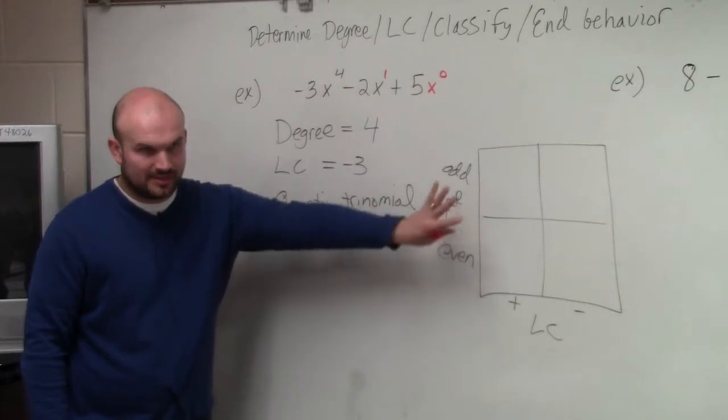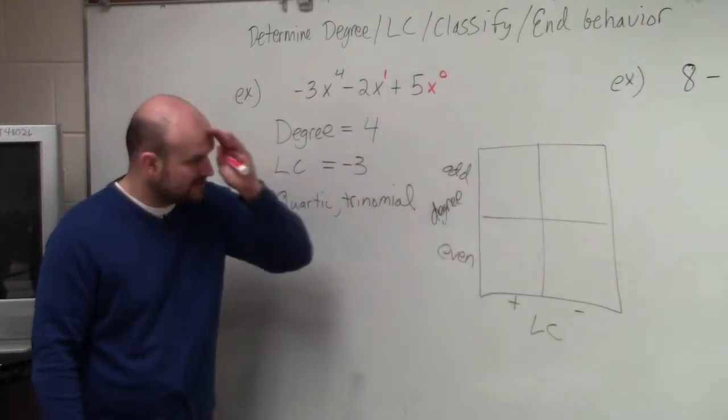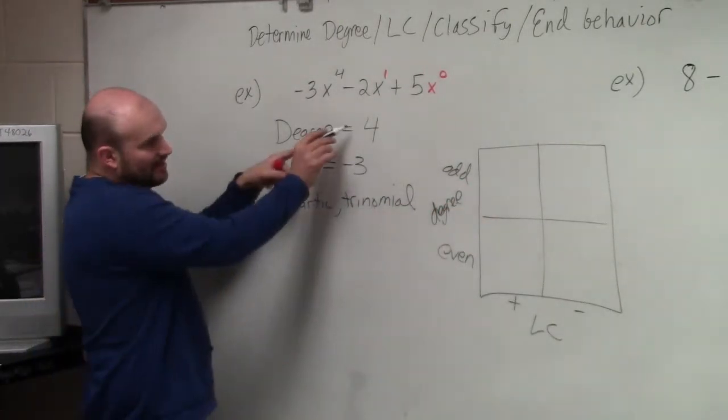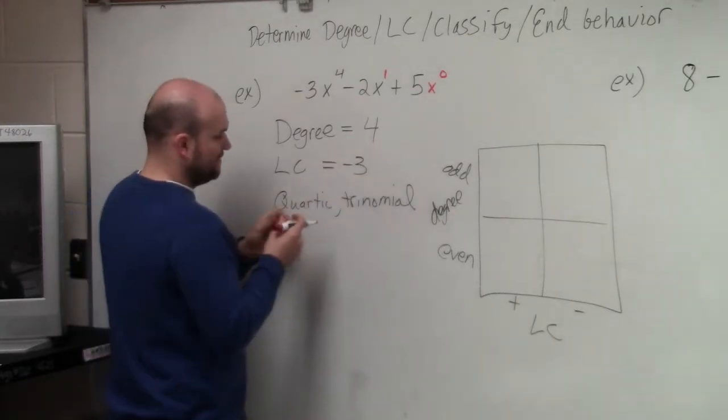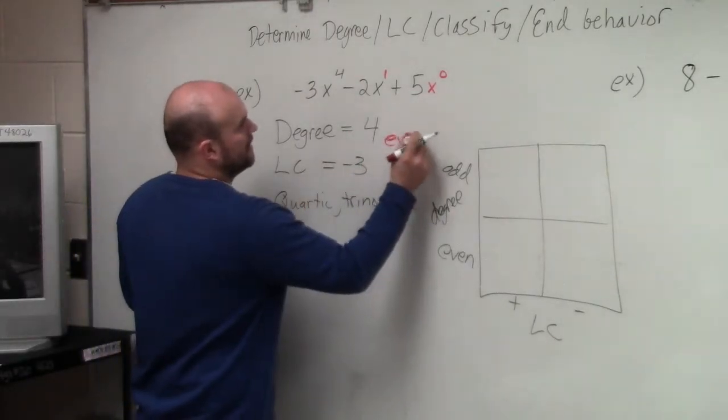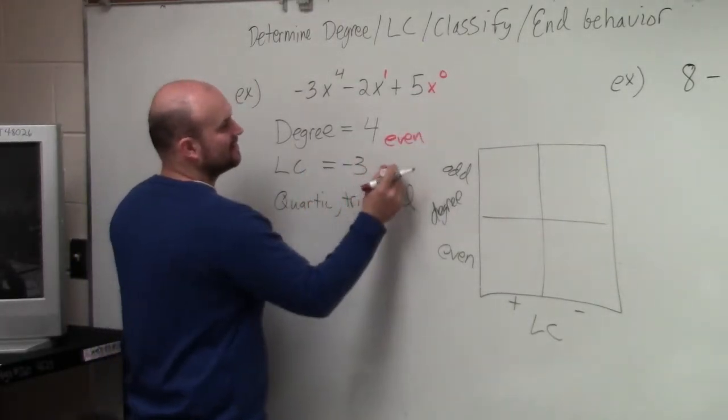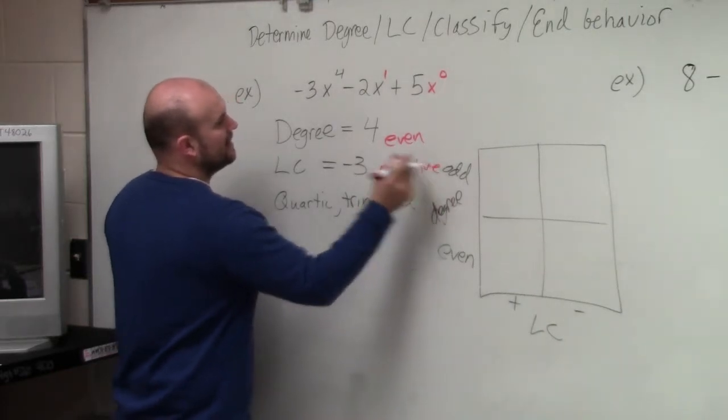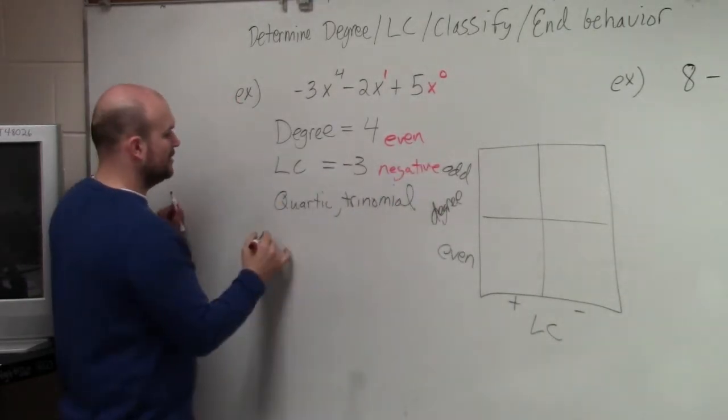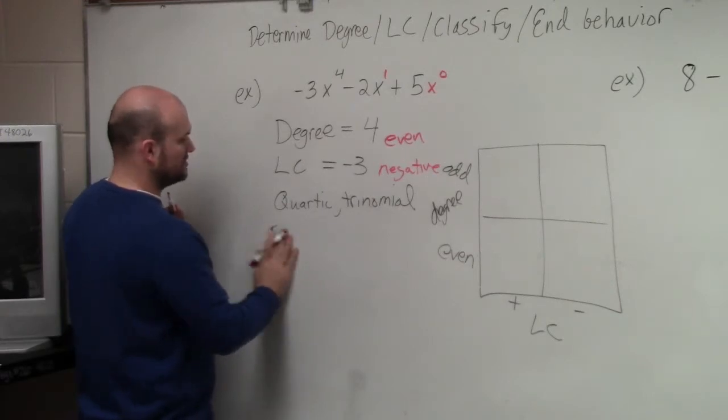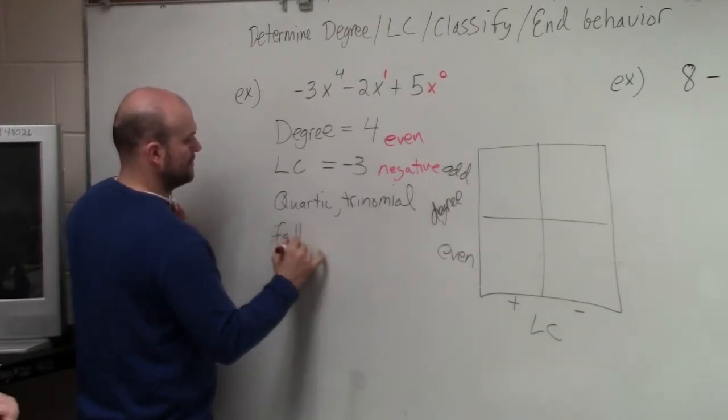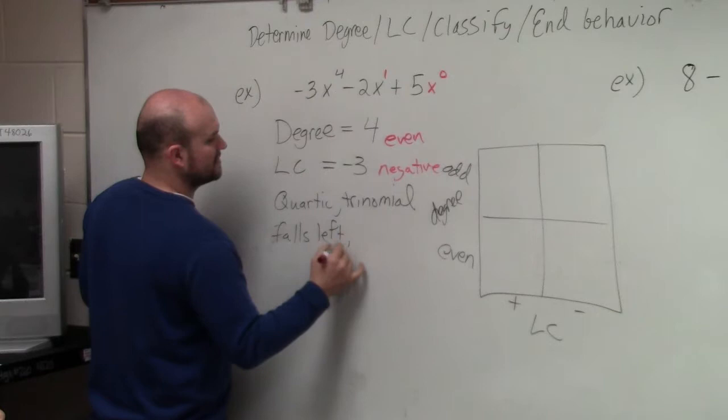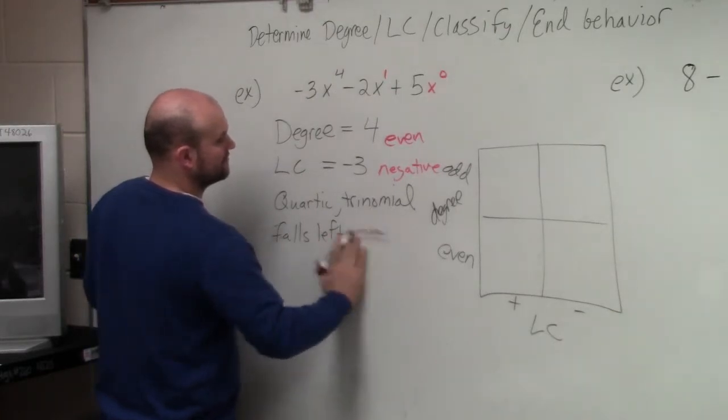Now, I'm not going to fill in this chart, because again, this is something in previous notes I don't want to spend the time on. But we notice here, my degree is even, and my degree is negative. So when your degree is even and your leading coefficient is negative, the graph falls left and falls right.